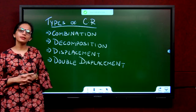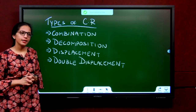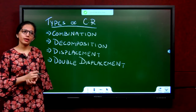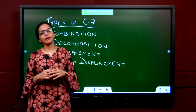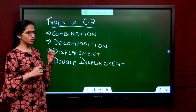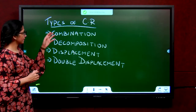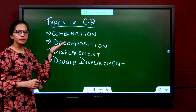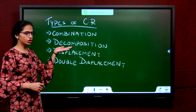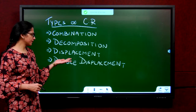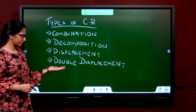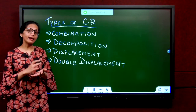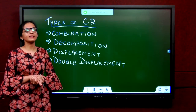In the previous section, we learned that every reaction is either exothermic or endothermic. Now, how do we classify reactions? Reactions are classified into four types: combination reaction, decomposition reaction, displacement reaction, and double displacement reaction. We will study each one in detail and understand what they are with different examples.